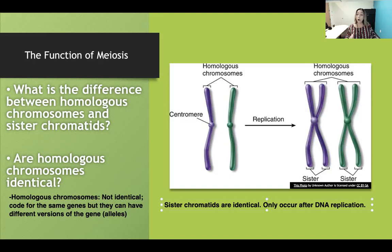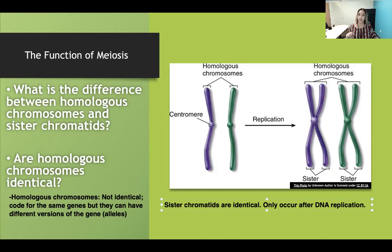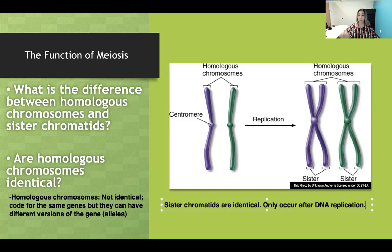The cell cycle includes G1, S, G2, and M phase. G1, S, and G2 are collectively called interphase. S phase is part of interphase and is when DNA synthesis or replication occurs. S phase is in preparation for cell division, but it is not considered part of mitosis or meiosis. The sequence is G1, S with DNA replication, G2, then M phase, which stands for mitosis or meiosis depending on the cell type.